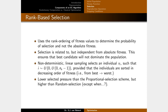With rank-based selection, you order individuals from best to worst and then use a non-deterministic linear sampling approach to select an individual. Individuals at the beginning of the list have a higher chance of being selected. For example, you take a random value from 0 to N-1, then take another random value from 0 to that value — this gives individuals earlier in the array a higher probability of selection.